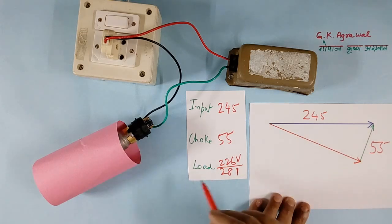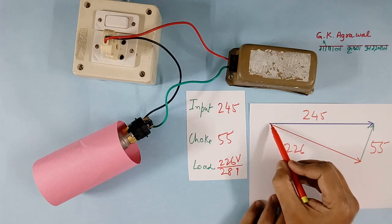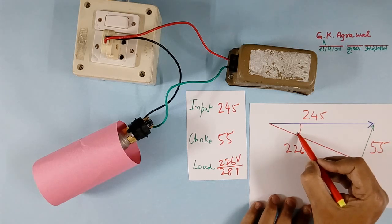And this is load voltage, 226V. So load voltage plus choke voltage is equal to input voltage. And there is a phase shift.